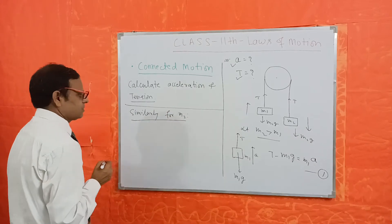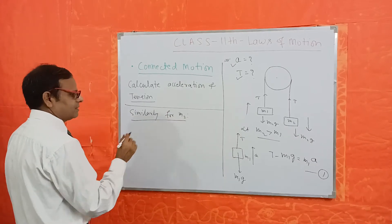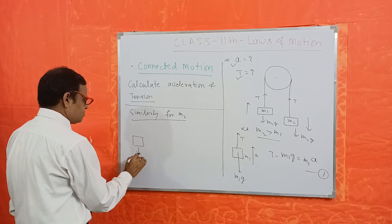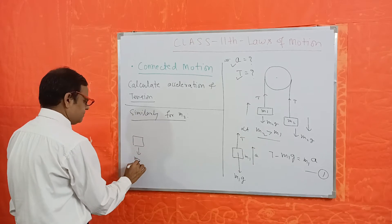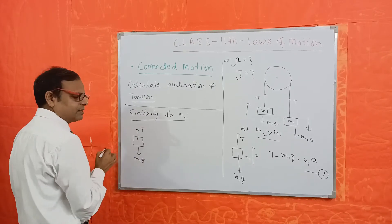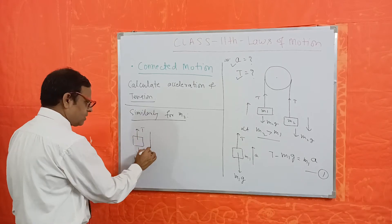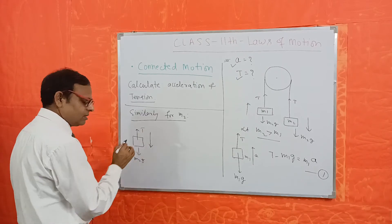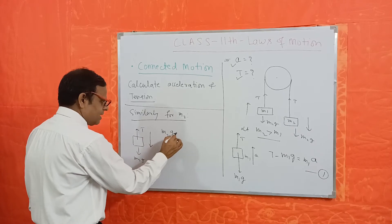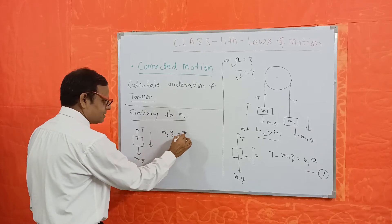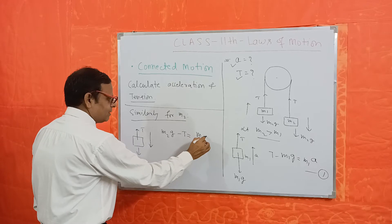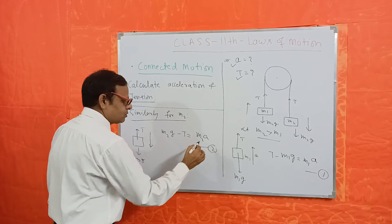Similarly for M2: the equation of motion gives M2g downward and tension T upward, but the overall motion is downward because M2g is bigger than T. So M2g minus T equals M2 times A. This is equation number 2.